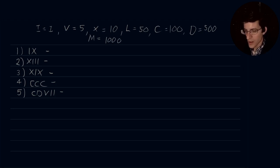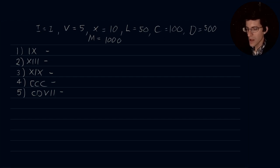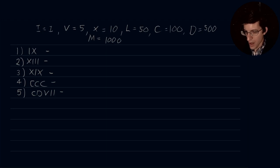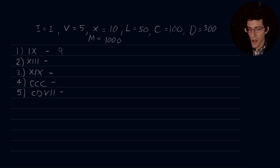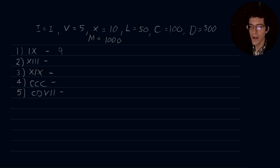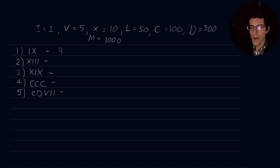With that in mind, let's start working out these problems. Our rules: repeating a letter repeats its value; when a letter follows one of greater value, its value is added; when a letter precedes one of greater value, its value is subtracted. So our first one, IX: I is of less value than X, so we take one away from X. This in Arabic numerals is 9. Number two, XIII: we have three values repeated, so they are added — 1 plus 1 plus 1 is 3. And our I values are less than our X value, so the sum of 3 is added to 10, giving us 13.